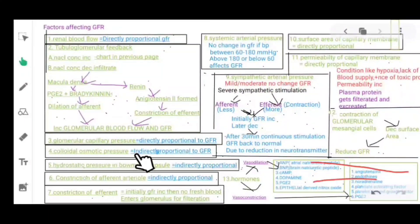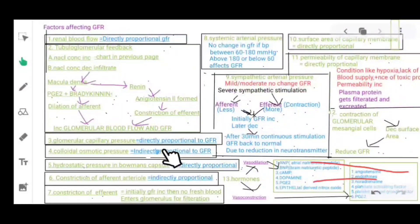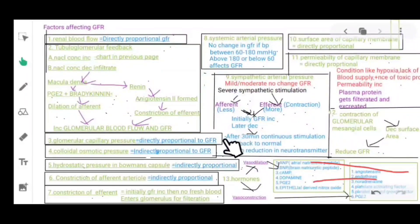Third: glomerular capillary pressure — it is directly proportional to GFR, as studied in the previous slide, because it favors filtration. Fourth and fifth: colloidal osmotic pressure and hydrostatic pressure in Bowman's capsule — both are indirectly proportional to GFR and oppose filtration.